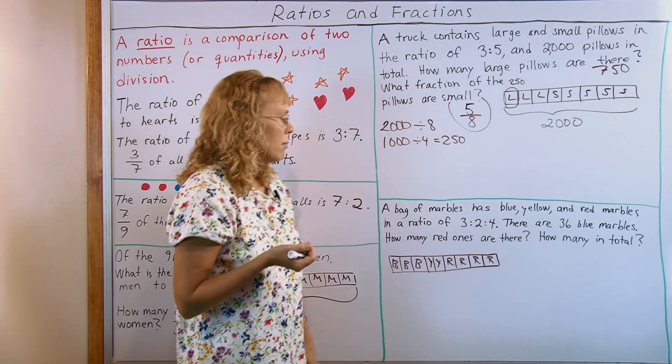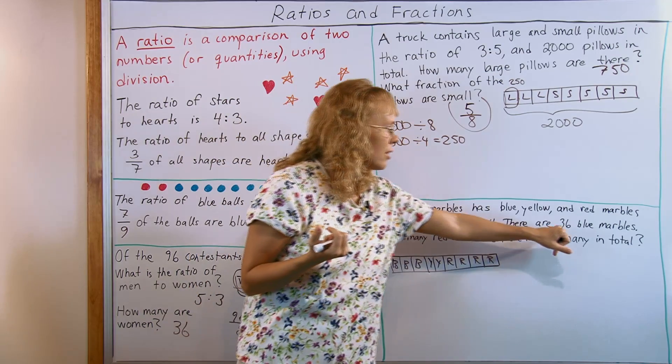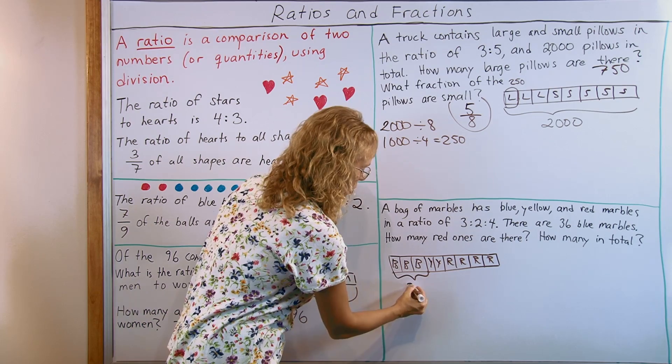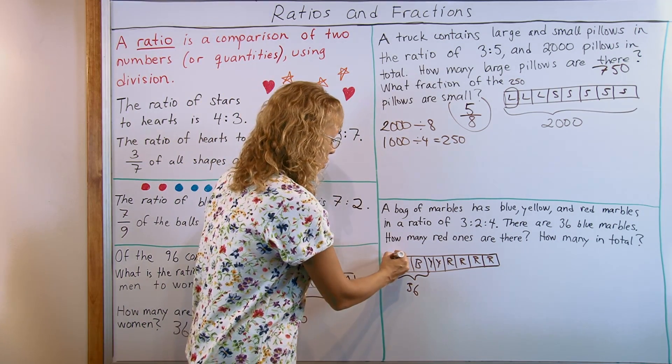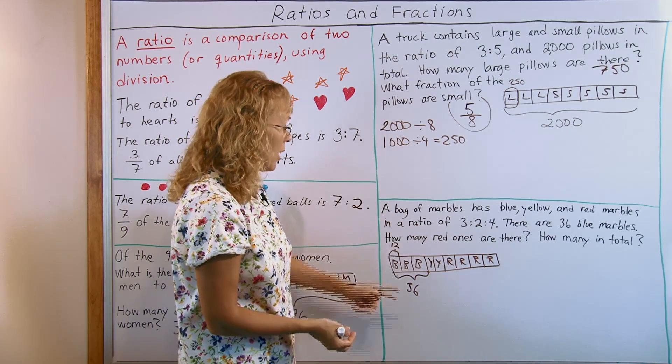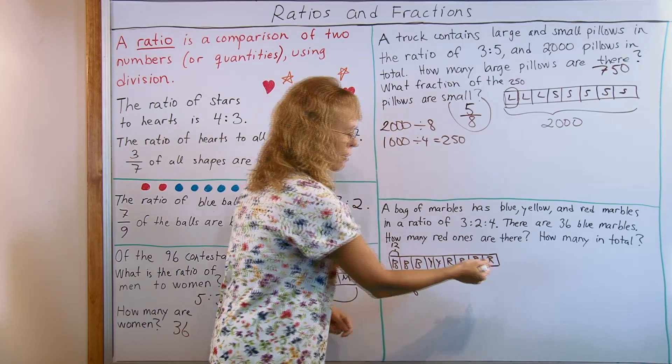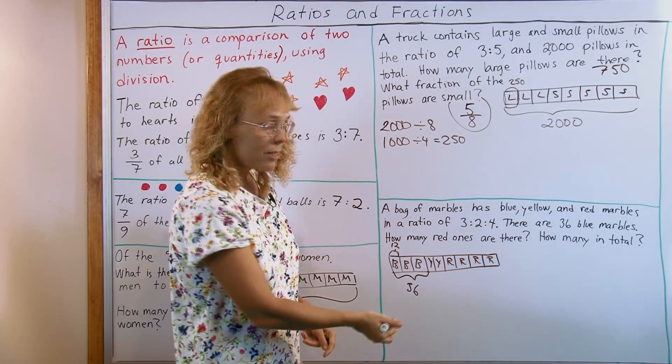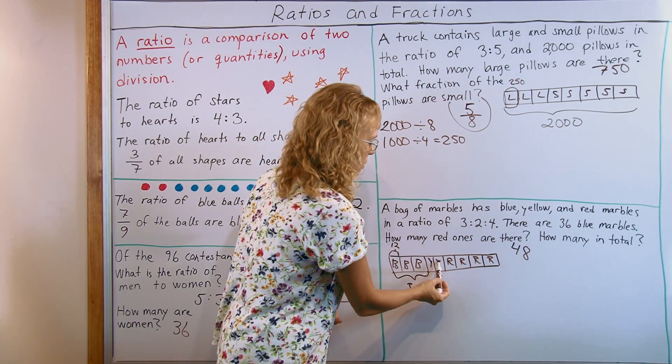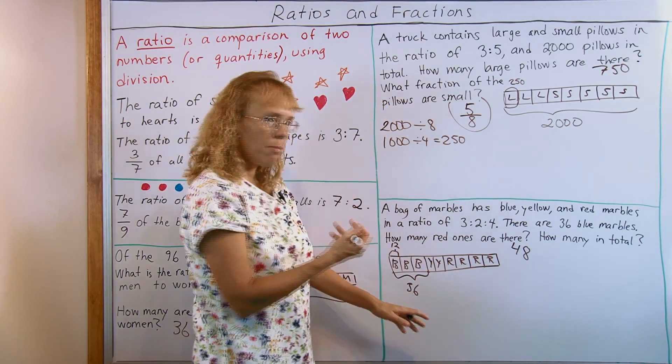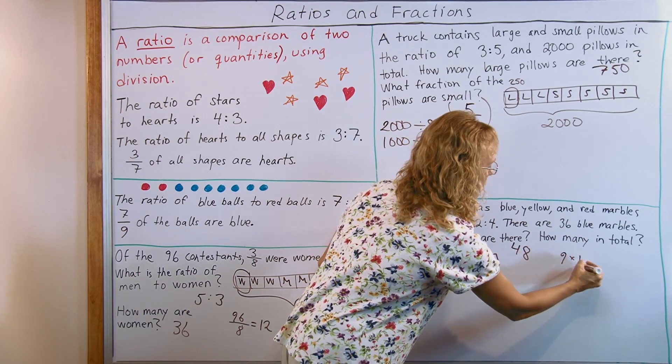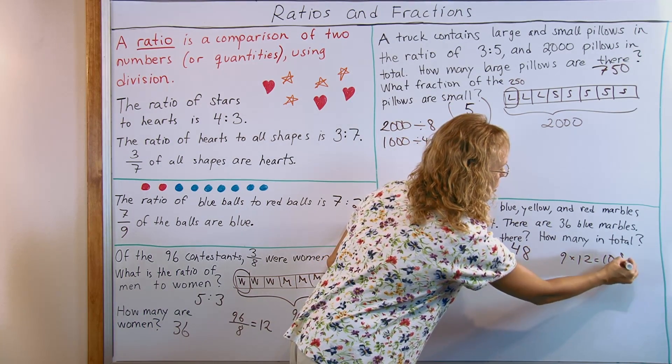But one other piece of information is that there's 36 blue marbles, so I'll mark that these 3 blocks here are 36. 36 blue marbles. So one block is of course 12, and now it all solves really easily. How many red ones are there? 4 times 12, red marbles 48. How many in total? There's 9 parts, 9 blocks in my diagram. Each block is 12, so how many in total is 9 times 12? 108 marbles. There.